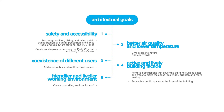I have five main goals for the City Hall. First is safety and accessibility, which will be done by encouraging walking, biking, and using public transportation. Second is better air quality and lower temperature, achieved by providing more access to nature and adding courtyards. Third is the coexistence of different users, done by providing public spaces. Fourth is an active and lively building facade to make the space livelier and more inviting. And the fifth is a positive working environment, achieved by providing co-working stations for the staff.